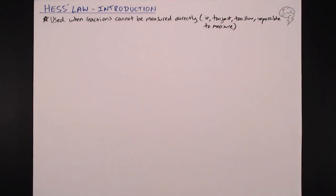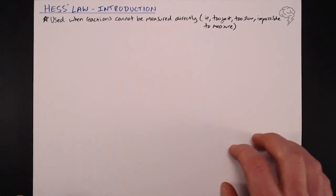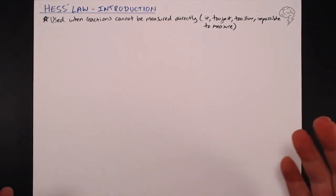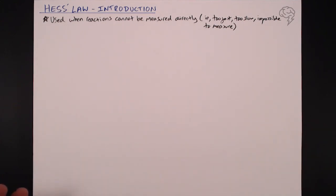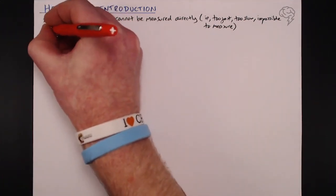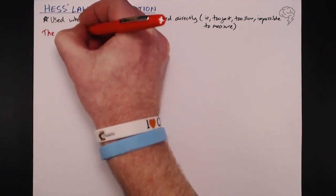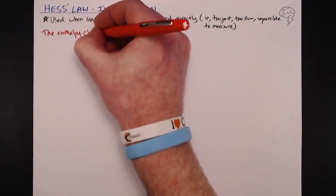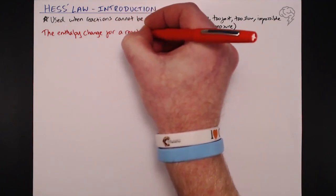There are a number of different definitions of Hess's law across different textbooks, but this is by far the most simple and easy to remember: the enthalpy change for a reaction is independent of the route taken.